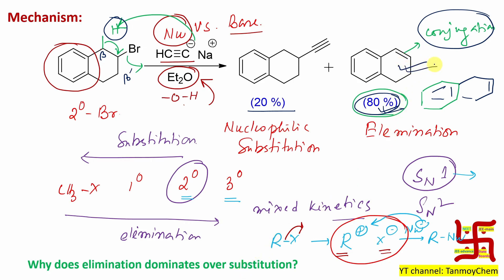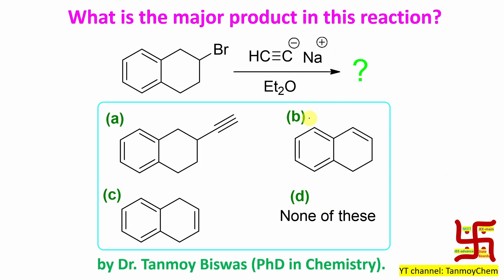So elimination dominates over substitution — 80% versus 20% — because the elimination product is relatively more stable due to conjugation, and nucleophilic substitution is hindered by the secondary carbon and the electronic cloud of the phenyl ring. Therefore, option B is the major product. If you get this question and need to solve it in under 30 seconds: secondary substrate means both SN and elimination are possible, and the conjugated alkene product is more stable.